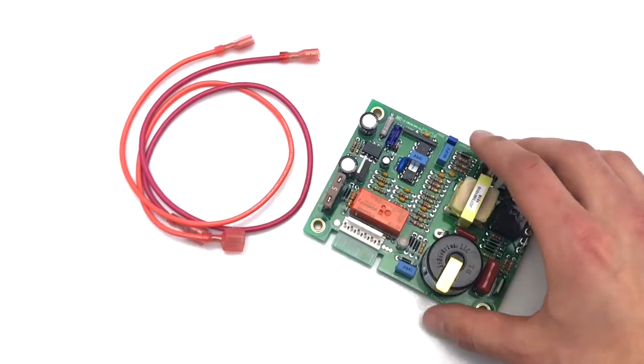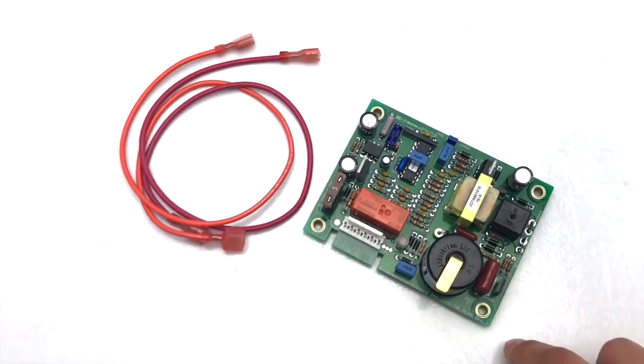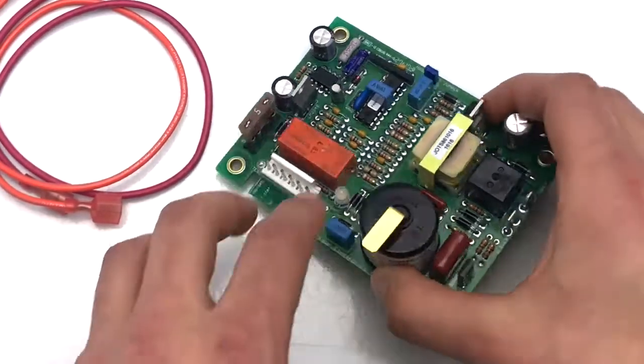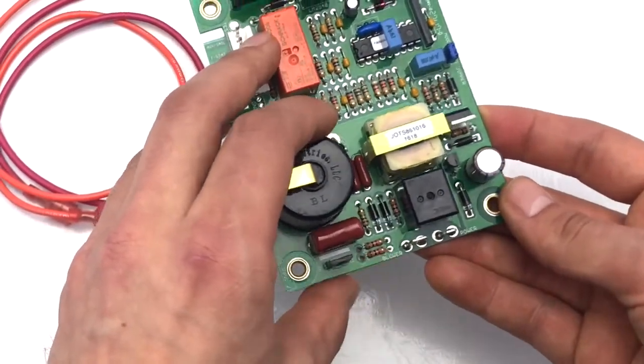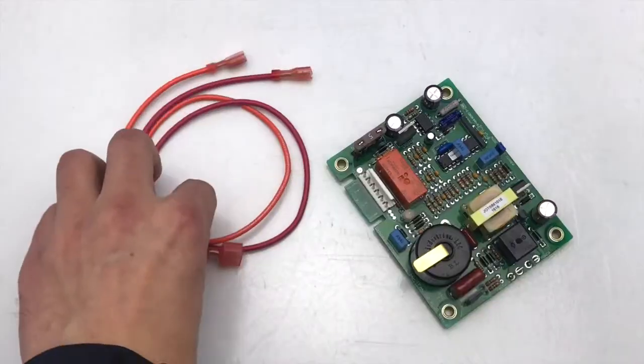The board itself measures three and a quarter inches by four and a quarter inches. One of the key features of the Fan 50 Plus Pins board is the power and blower spade terminals. They're located right here. The board includes the red and orange terminal wires as well.